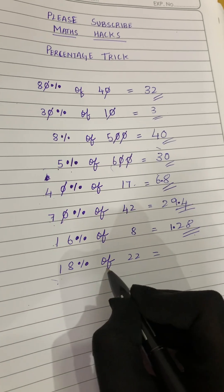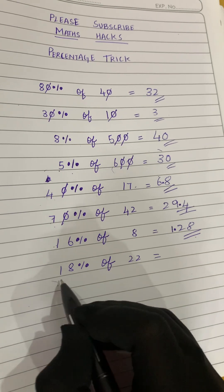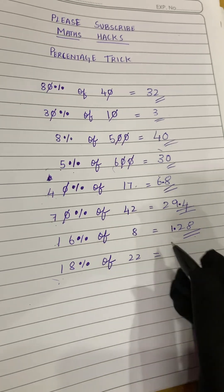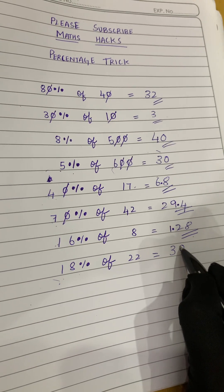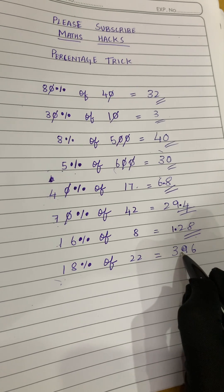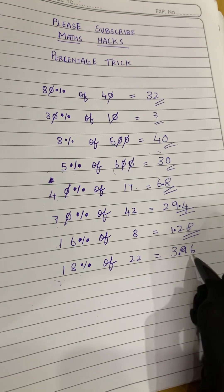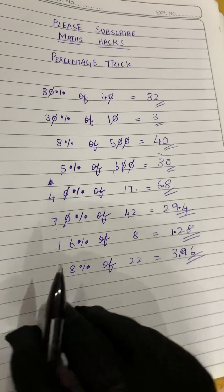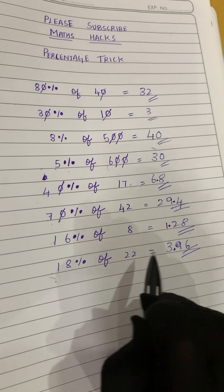Now 18 percentage of 22. We will multiply 18 into 22. We will get 396. Here also we will put a decimal point after two digits. So this is our final answer. So 18 percentage of 22 is 3.96.